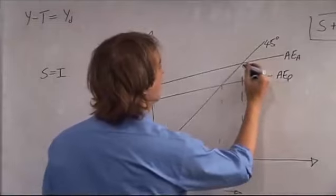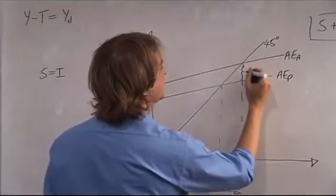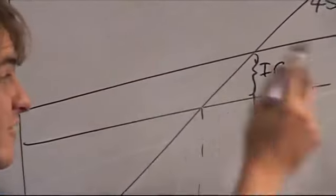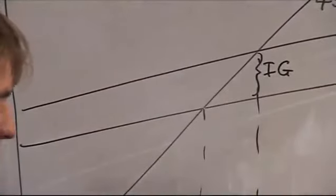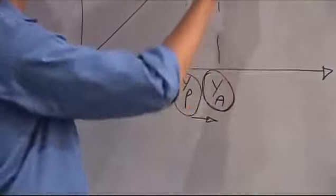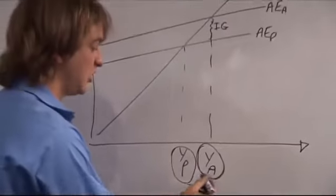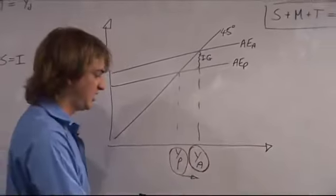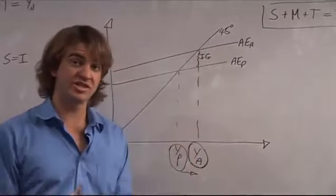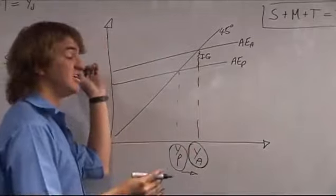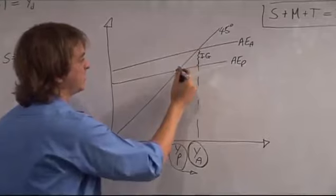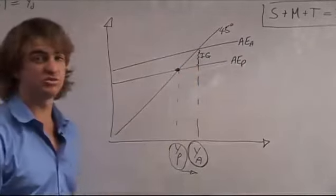The inflationary gap is the distance between these two aggregate expenditure lines. The aggregate expenditure at full employment will give you this full employment potential output of Y, whereas your actual aggregate expenditure, if it is too high — if there's excess aggregate expenditure — will be greater than your full employment GDP. The inflationary gap is the distance between these two, and you would need to try to restrict aggregate expenditure, perhaps by decreasing government spending, so as to get your actual output back down to your potential GDP equilibrium.